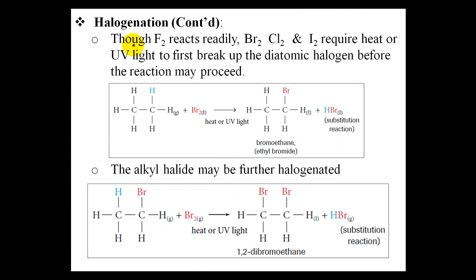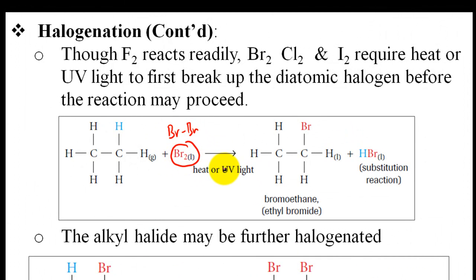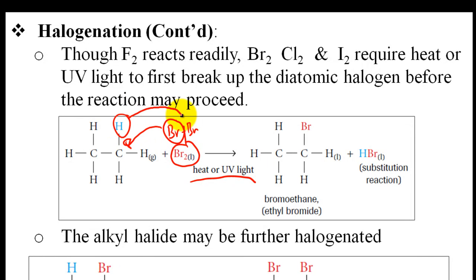Although fluorine is one of the most reactive elements on the periodic table and readily reacts with alkanes, alkenes, and alkynes, bromine, chlorine, and iodine are not as reactive. They require heat or UV light to first break up the diatomic halogen before the reaction can proceed. Without UV light or heat, the bromine or chlorine molecule will not break apart and cannot be substituted in. Once heat or UV light is present, the bromine-bromine bond breaks, allowing one bromine to substitute in and produce hydrobromic acid and the alkyl halide.